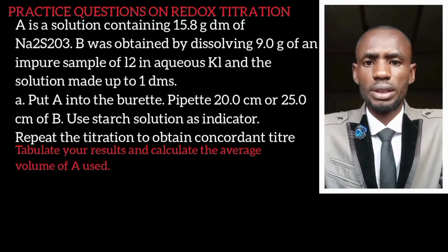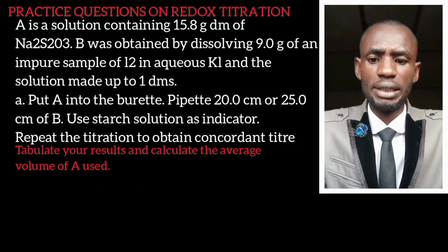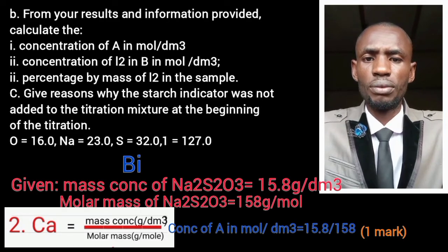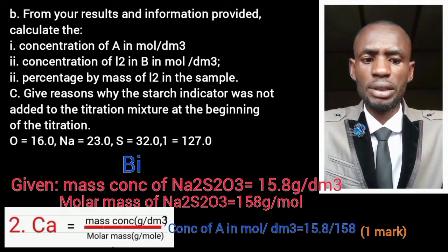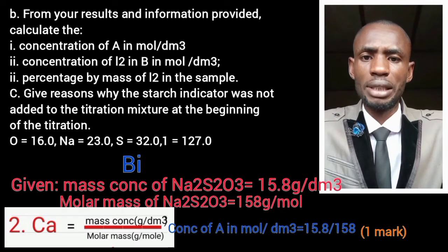From your results, calculate: the concentration of A in mol per dm³; the concentration of B in mol per dm³; the percentage by mass of iodine in the sample; and give a reason why the starch indicator was not added to the titration mixture at the beginning of the titration. The molar masses and atomic masses of the elements involved are given in the bracket.